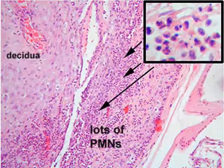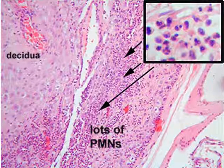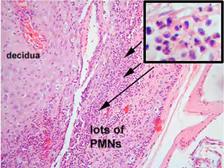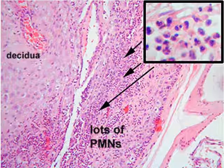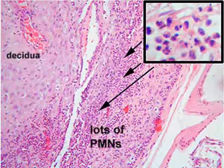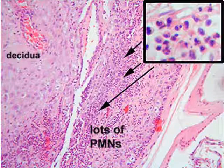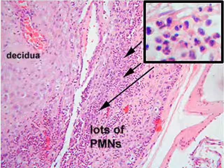On biopsy, if you look under the microscope, there is decidua — that is, products of conception. Whenever there is decidua, there are always a lot of polymorphonuclear neutrophils. You can see in the inset that they are multi-lobed acute inflammatory cells present in the endometrium.